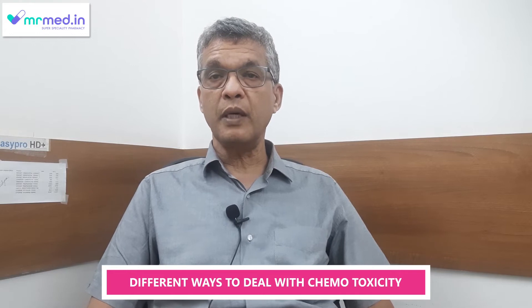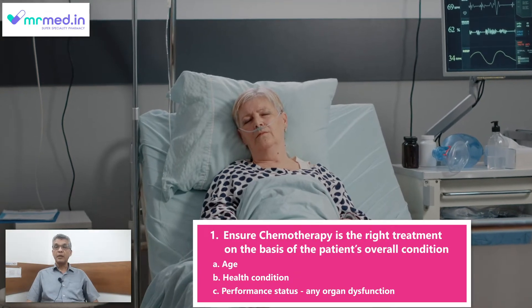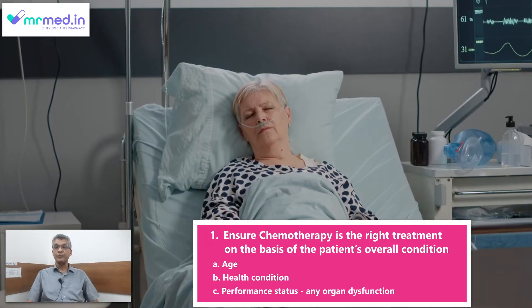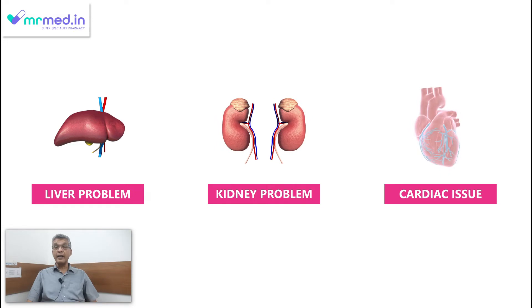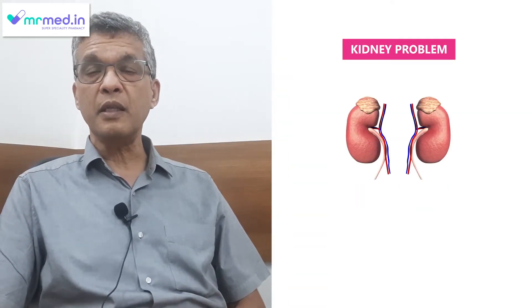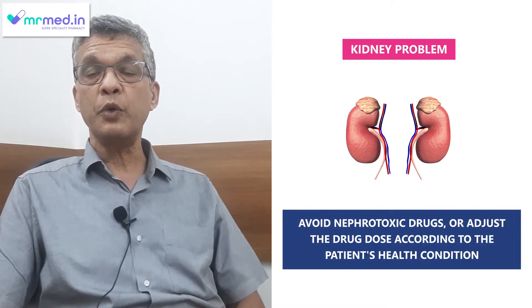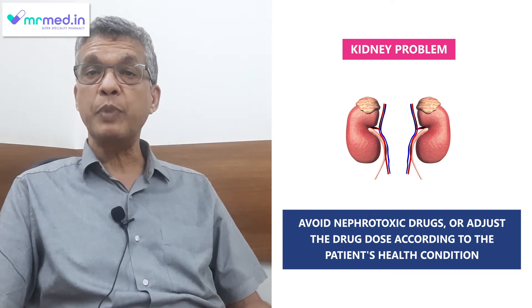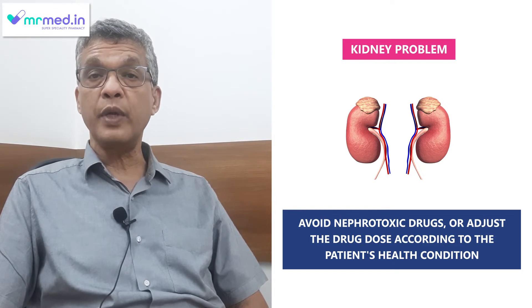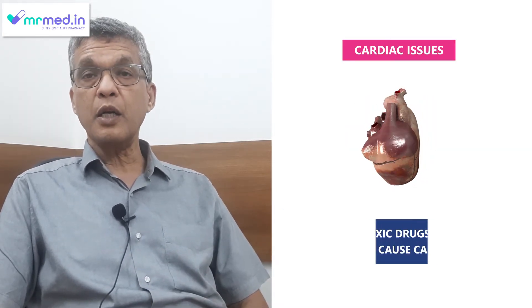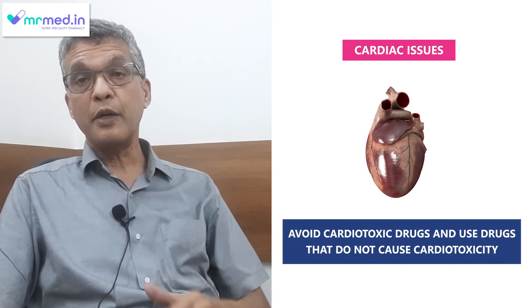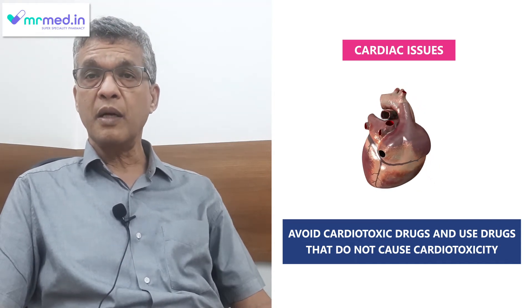There are several ways of dealing with chemotoxicity. One is to select patients properly. If somebody is very old, their performance status is not very good, their general condition is not good, or they have organ dysfunction — because some may have liver problems, some may have kidney problems, some may have cardiac issues. For example, if somebody has a kidney problem, there are certain drugs we should not use, or even if we do, we have to reduce the doses. Carboplatinum and cisplatinum are drugs which immediately come to mind and are very important in several solid cancers. If somebody has cardiac issues, there are cardiotoxic drugs like anthracyclines, and we try to avoid those and use other drugs which do not produce cardiotoxicity. The same applies to liver toxicity. So this is one way of reducing the side effects.